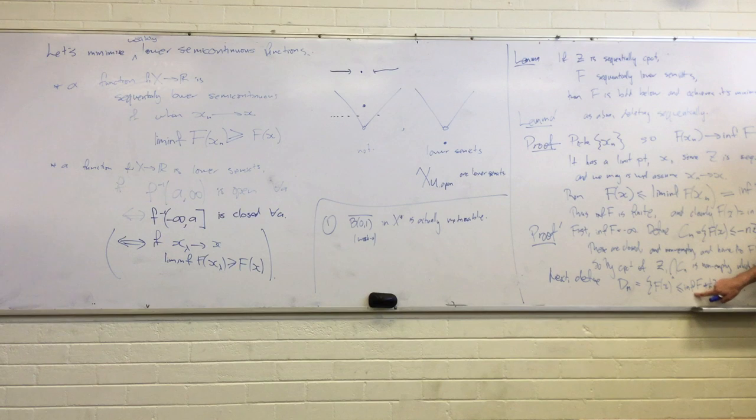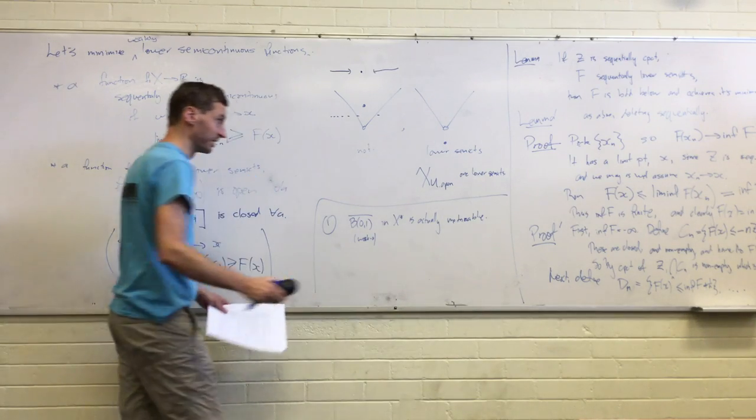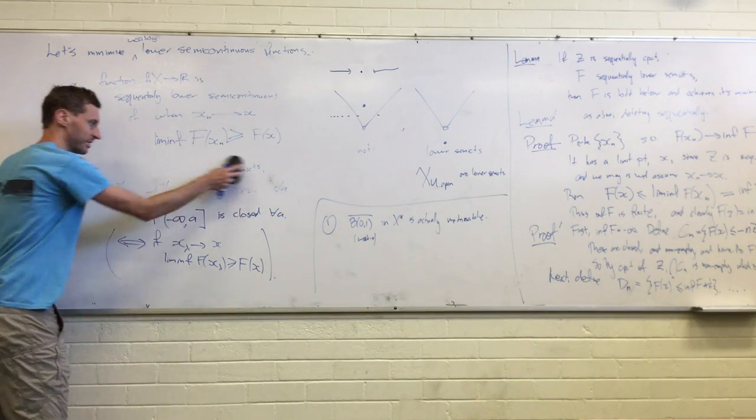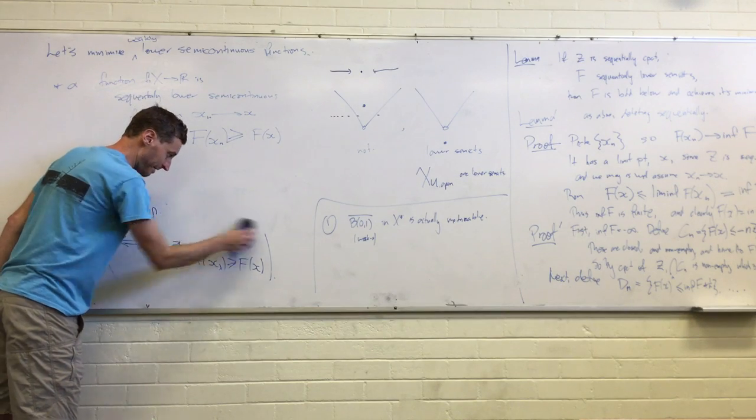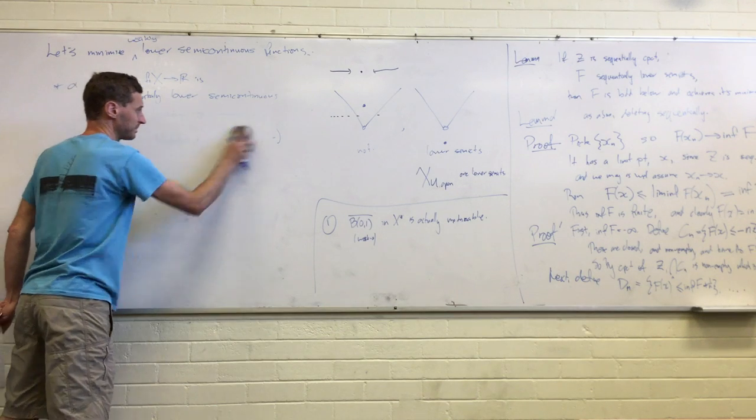And then basically using exactly the same argument. These are closed sets, because they're cut out by exactly one of those conditions. They're nonempty by the fact that you've got an infimum. Whatever your n is, you've got to have some points still inside here. They have the finite intersection property. Therefore, there's something in the complete intersection. And therefore, there's some point f(x), which is actually the infimum. So, from now on, we're just going to sort of ignore the distinction between sequential stuff and non-sequential stuff.